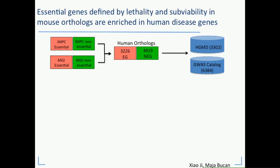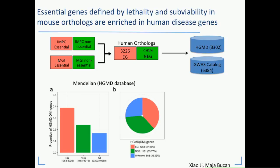We also want to understand the impact of essential gene identification on our ability to understand human disease. We took our IMPC essential list — all lethal and subviable genes — and our IMPC non-essential list, merged with the existing MGI essential and non-essential lists, and identified the human orthologues for all of these. We then looked in the Human Gene Mutation Database (HGMD) and the GWAS Catalog for enrichment in disease genes. The result is quite remarkable: the proportion of essential genes that are HGMD disease genes is nearly 40%, highly enriched versus non-essential genes overall. Identifying essential genes is an excellent first step in identifying and characterizing human disease genes.